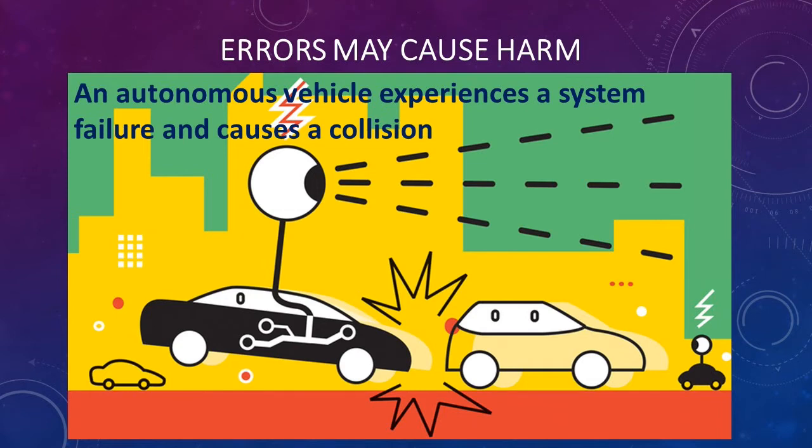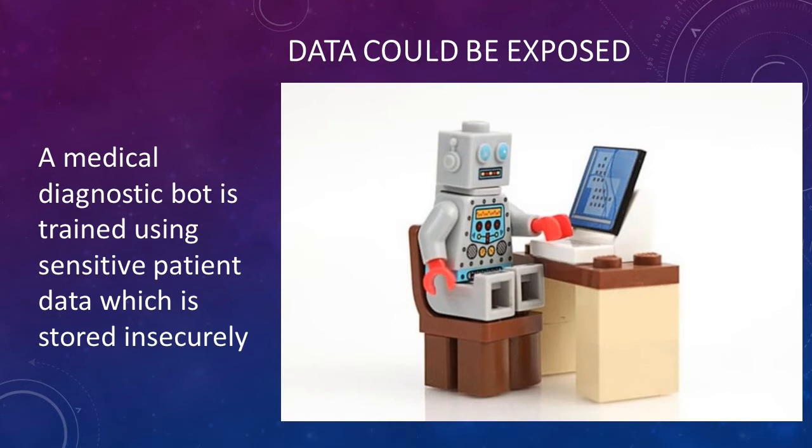An example of errors causing harm is an autonomous vehicle which experiences a system failure and causes a collision.